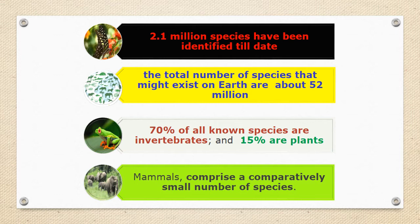Invertebrates are those animals which have no backbone, such as insects, sponges, worms, etc., while 15 percent are plants. Mammals, the animal group to which man belongs, comprise a comparatively small number of species.